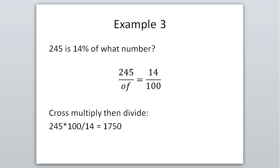Another example: 245 is 14% of what number? Using 'is over of equals percent over 100,' the 245 is attached to 'is' so it goes on top, 14 goes in the percent spot, and the unknown goes where 'of' is. Cross multiplying and dividing: 245 times 100 divided by 14 gives us 1,750. So 245 is 14% of 1,750. That little equation helps you get everything in the right spot.